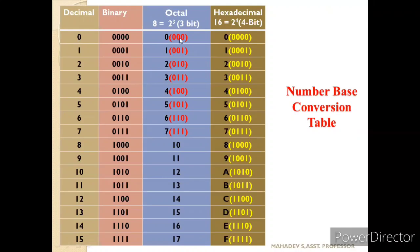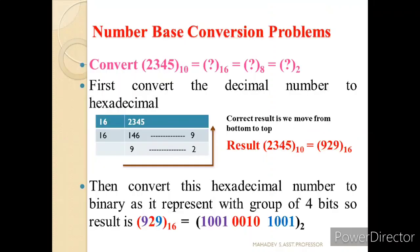In the octal table, 0 is represented by three zeros, 1 is represented by 001, and similarly 7 is represented by 111. If you remember this particular table, it will be very easy to convert from one base system to another. So let us understand the number base conversion with problems.